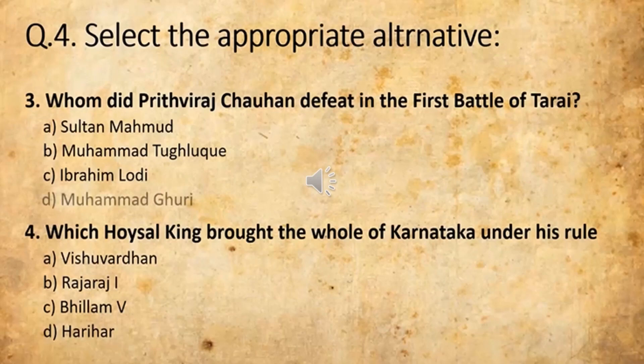I repeat: Whom did Prithviraj Chauhan defeat in the first battle of Tarain? The options are: A) Sultan Mahmud, B) Muhammad Tughlaq, C) Ibrahim Lodi, and D) Muhammad Ghuri. The correct answer is D — Muhammad Ghuri. You are going to click on that. Coming to the fourth one.